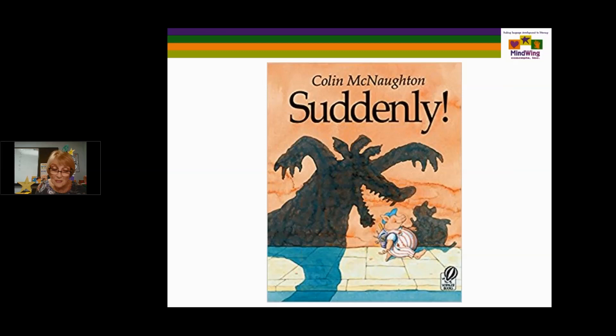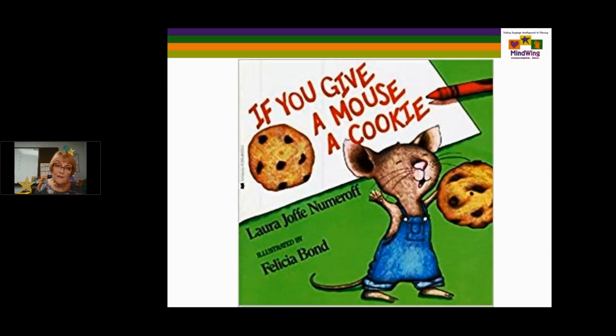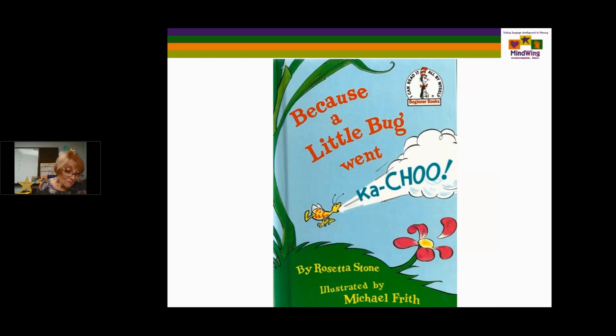If You Give a Mouse a Cookie is an if-then book. The word 'then' isn't used, but I like to have kids put it in. 'If you give a mouse a cookie' is the kickoff, then he will do something — all the way through, it's that text structure. Because a Little Bug Went Ka-Choo begins with a ho-hum day. I like to call the setting a ho-hum day if it's what you expected to have happen. This is an example of an explicit kickoff — the kickoff caused effects, and when the little bug went ka-choo, it caused a reaction. The beauty of stage three is that the causal chain is present for the first time. That is a hallmark stage because it's cause and effect.